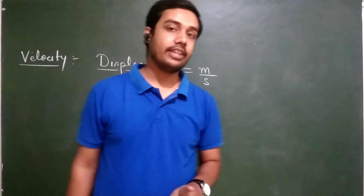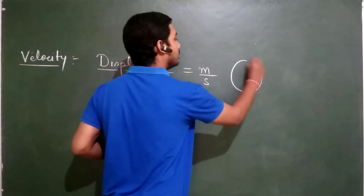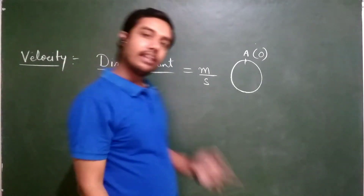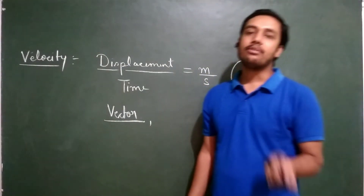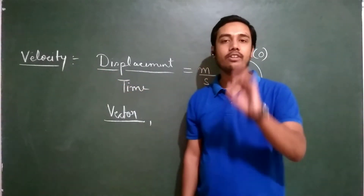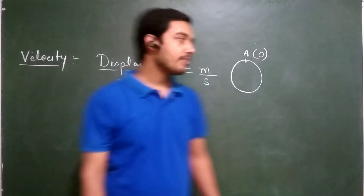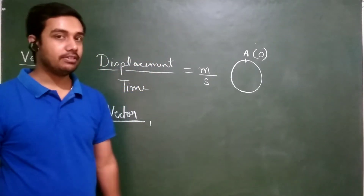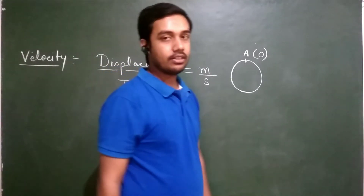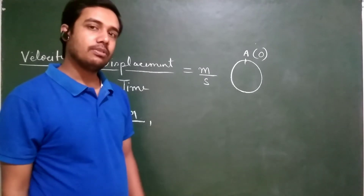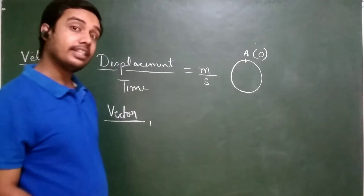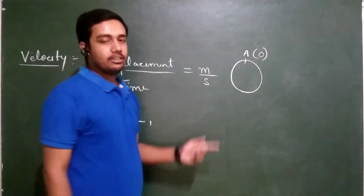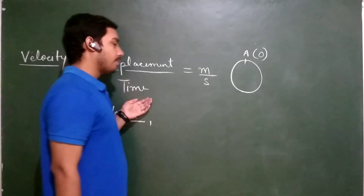In the case of a circular track, when I am returning back to my initial position, the displacement is zero. That means if the object returns back to its initial position, displacement will be zero and velocity will also be zero. This is another key difference between speed and velocity.